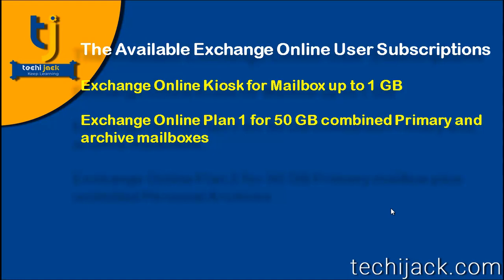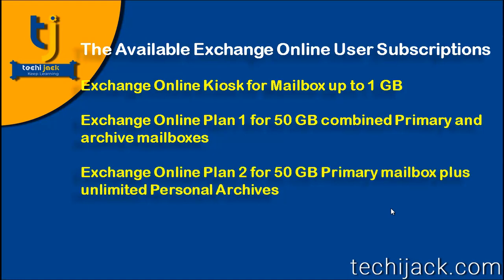The next one is Exchange Online Plan 1, where you get 50 GB combined for both your primary and archive mailboxes. The third one is Exchange Online Plan 2, where you get 50 GB for your primary mailbox plus unlimited space for your personal archives.